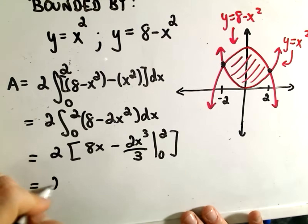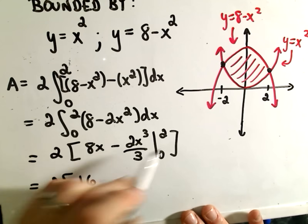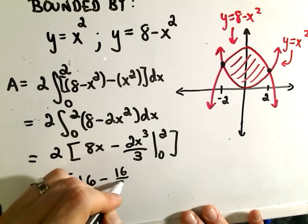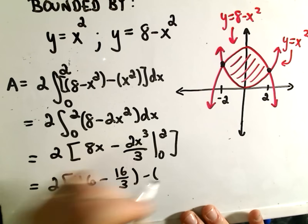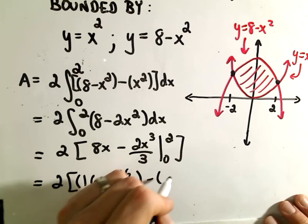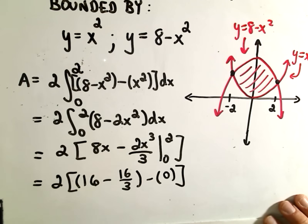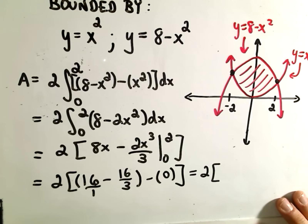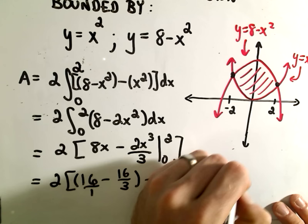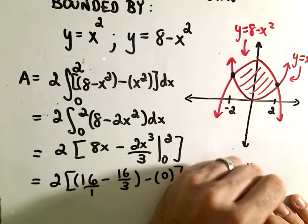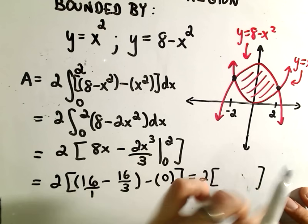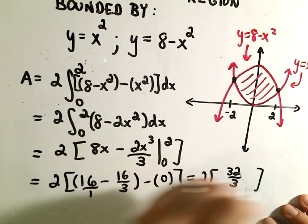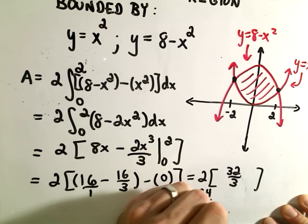Plugging in the upper limit of integration, we get 8 times 2, which is 16, and 2 cubed is 8 times 2 over 3, which is 16 thirds. When we plug in the lower limit of 0, everything is 0. Simplifying inside with a common denominator of 3, we get 48 over 3 minus 16 over 3, which is 32 over 3. Multiplying by 2, our area is 64 divided by 3.